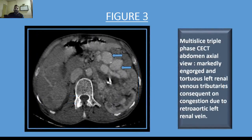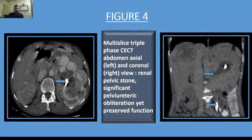Multiple markedly engorged tortuous left renal venous tributaries are seen, consequent on congestion due to the retroaortic left renal vein. A renal pelvic stone with significant pelvic ureteric obliteration and preserved function can be appreciated on the axial view on the left as well as the coronal view on the right.